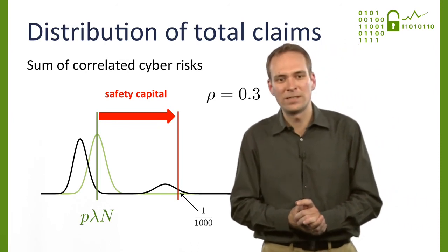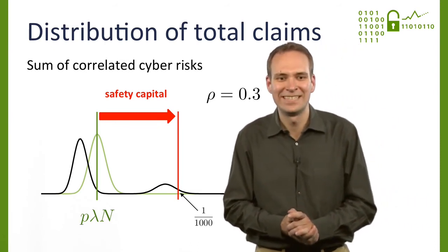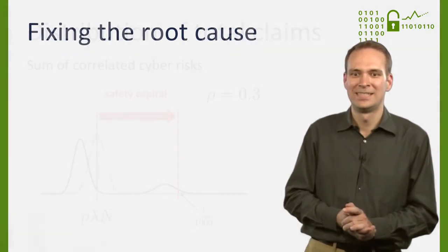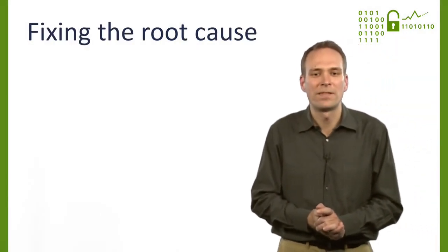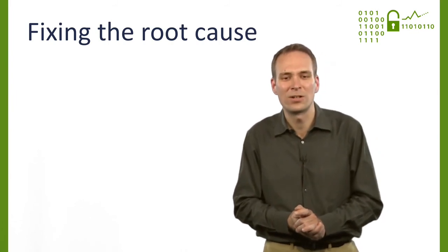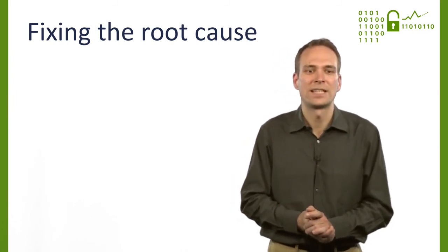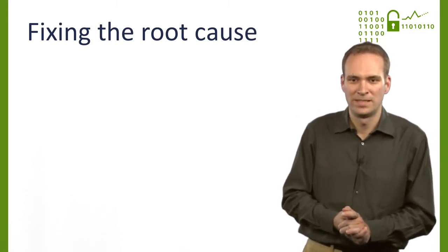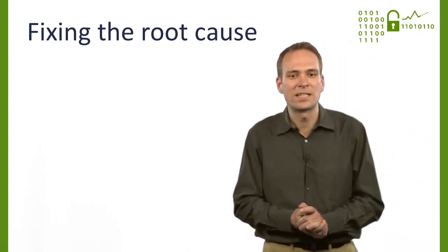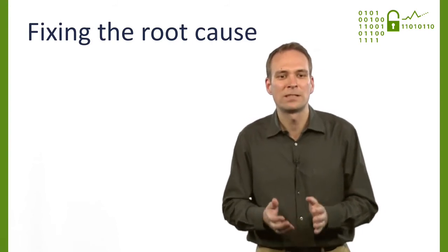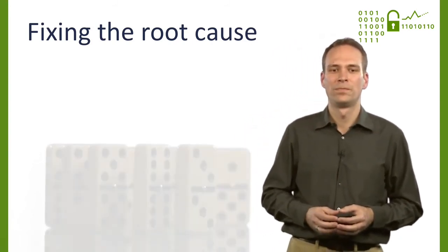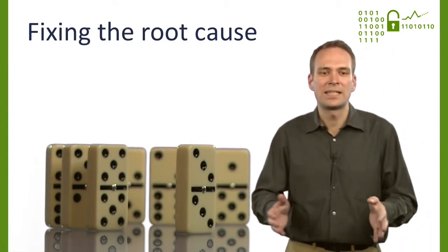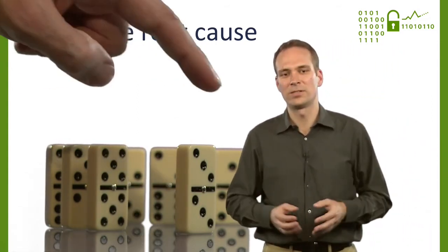Although it is difficult to quantify the amount of correlation exactly, there is quite some evidence that cyber risk is often correlated. Making cyber risk insurable therefore means tackling the root cause of correlation — for example, by building and deploying more heterogeneous systems. In that case, newly discovered vulnerabilities do not become a common risk factor anymore. Another option is to limit interconnections to cut the propagation of risk in a network.